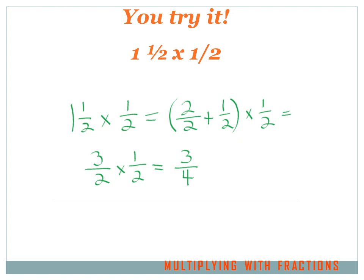Did you get that one? Let's see — we're trying to multiply 1 and 1 half times 1 half. So the first thing I'm going to do is convert 1 and 1 half to an improper fraction. 1 and 1 half equals 2 over 2 plus 1 half, then I multiply it times the 1 half. So 2 over 2 plus 1 over 2 equals 3 over 2, and now I've got an improper fraction which I can multiply times 1 half. 3 times 1 equals 3, 2 times 2 equals 4. So 1 and 1 half times 1 half equals 3 quarters.